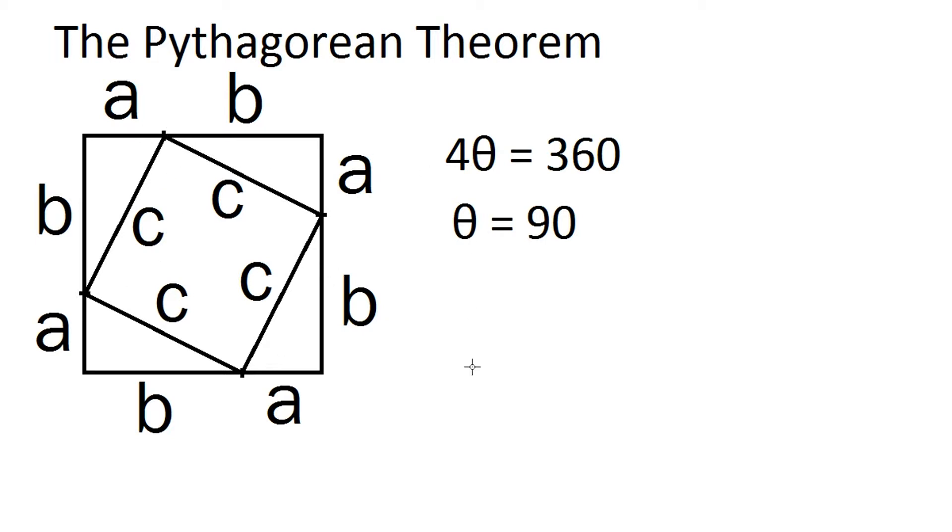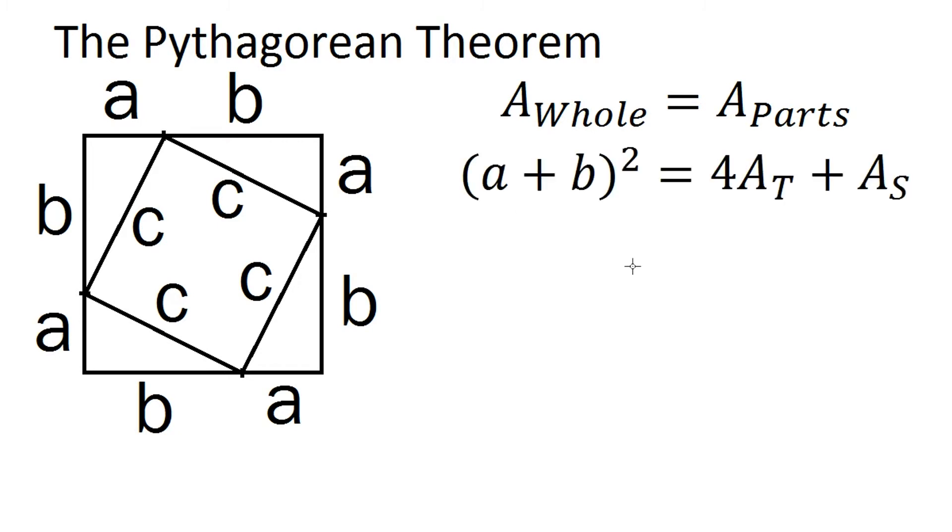And that's important for the next step because we're going to be writing an equality for the area of the whole shape compared to the area of the sum of the parts. So as you can see here, the area of the whole shape, this large outer square, must be equal to the area of the inner parts, which is going to be these four triangles plus this smaller square inside. And of course that's represented algebraically here.